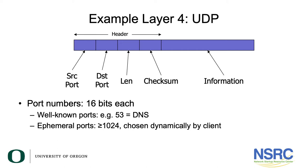The port numbers are 16 bits. Ports below 1024 are called well-known ports and they're assigned to applications. There's a registry at IANA which tracks official allocations — for example, UDP port 53 is used for DNS. Port numbers above 1024 are called ephemeral ports, and those are chosen dynamically by the client. So whenever you send a packet to a DNS server, the destination port will be 53, but the source port will be some number chosen by the client application or the operating system on its behalf. When the response comes back, that source port becomes the destination port, so the message can be delivered back to the right application.